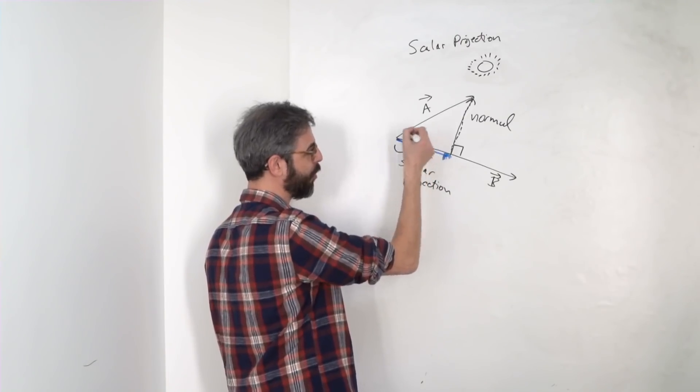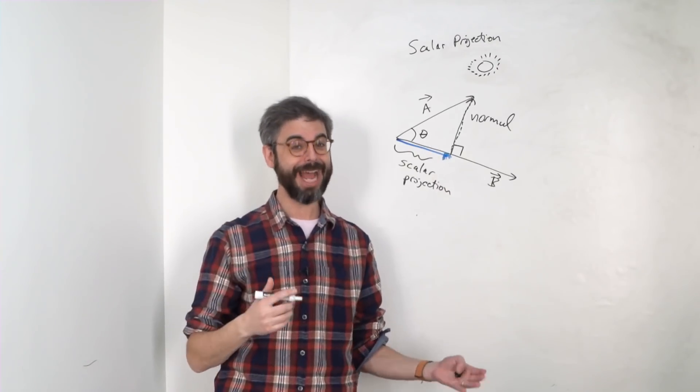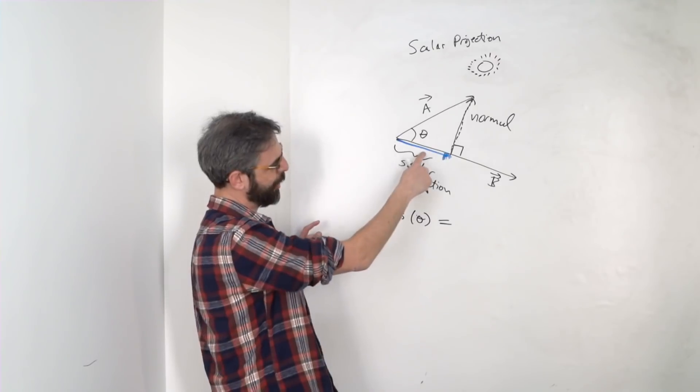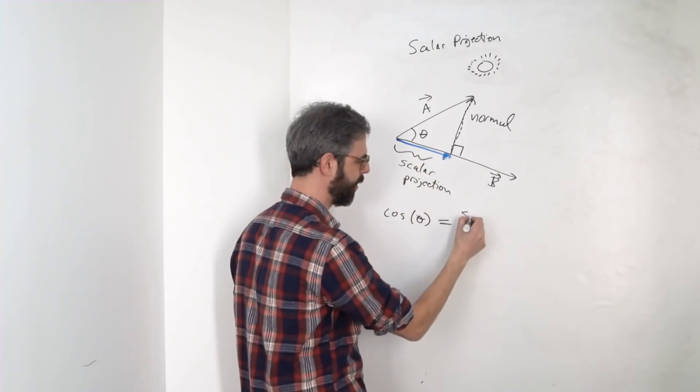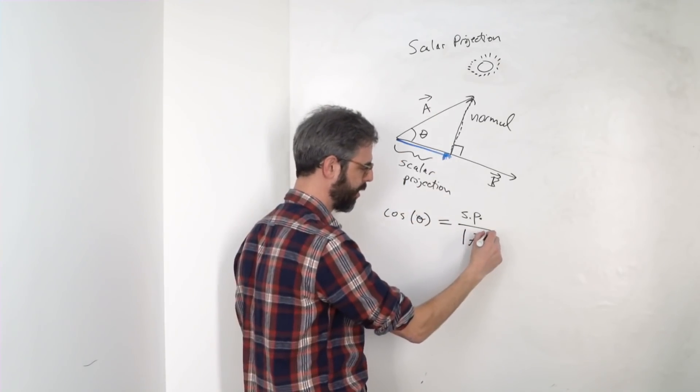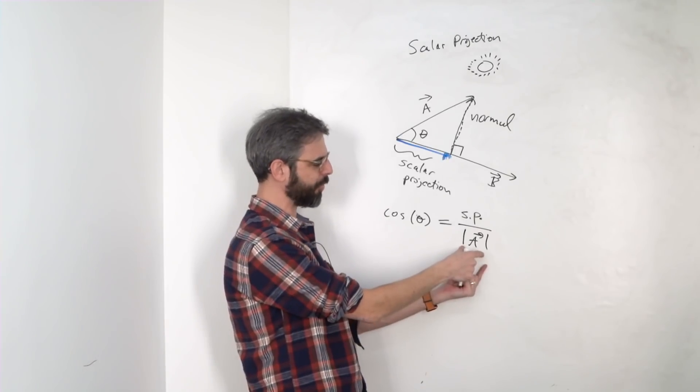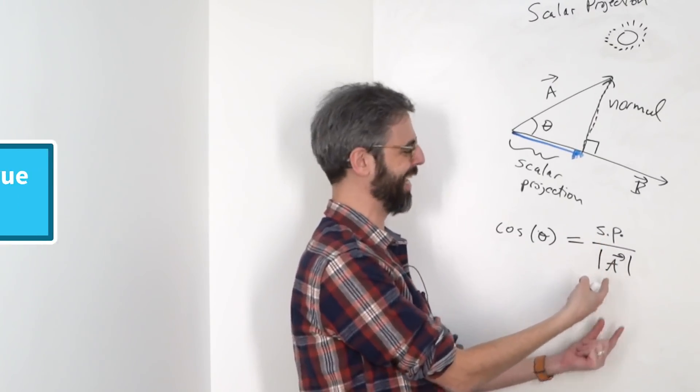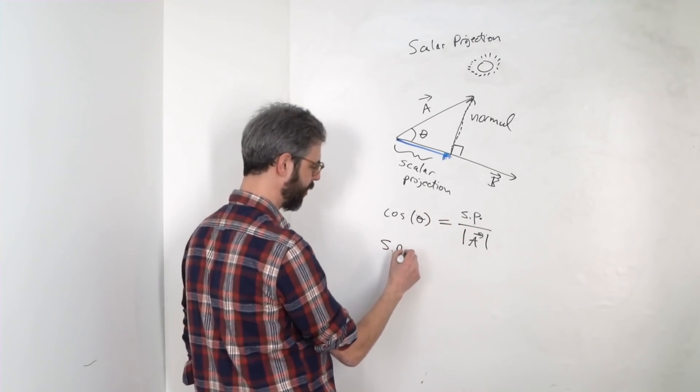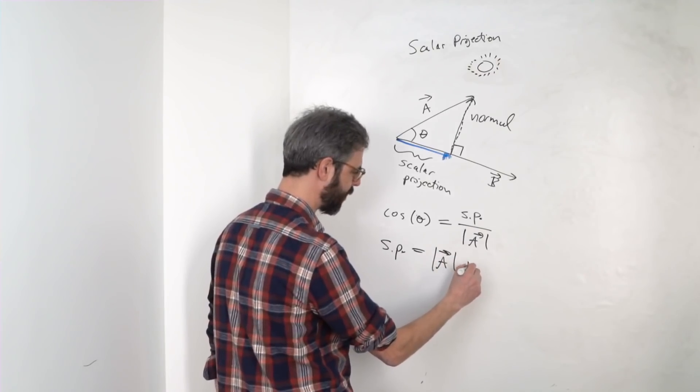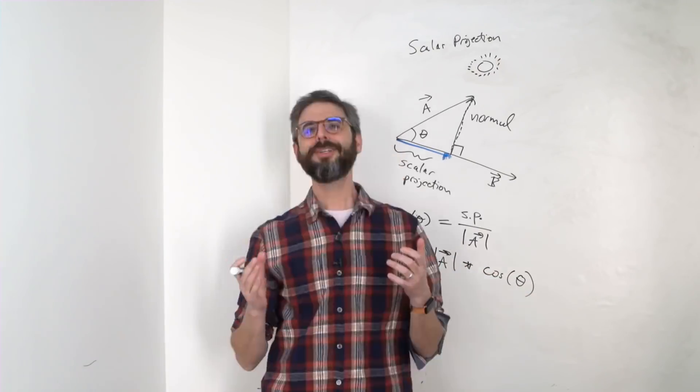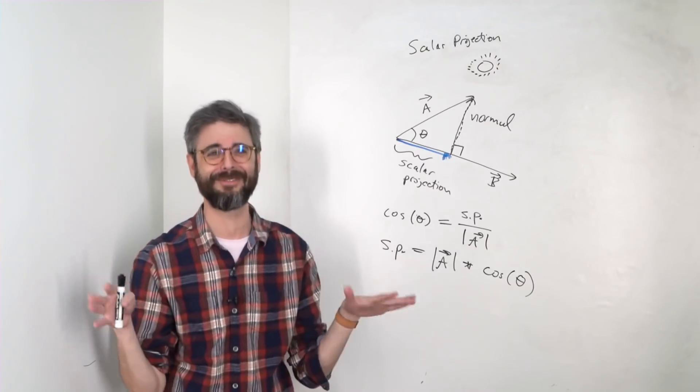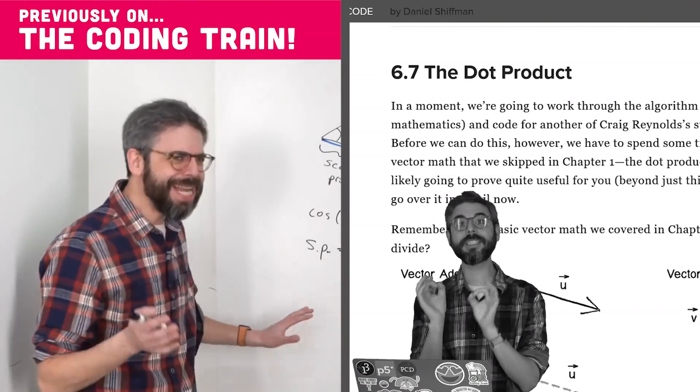Let's say I make this the angle theta. If you recall from chapter 3 and trigonometry, I could say that cosine of theta equals adjacent—the scalar projection, I'll call that sp—divided by the magnitude or length of vector A. You can refer to a vector's magnitude with these two pipe or line symbols next to the A.